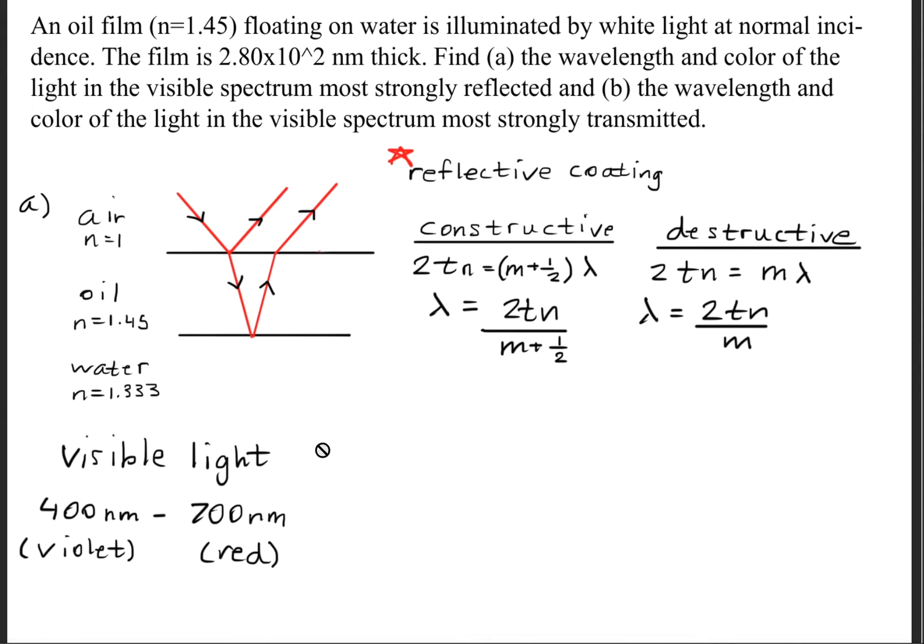I just want to remind us that the visible light spectrum ranges from 400 nanometers, which is the color violet, all the way to 700 nanometers, which is the color red. The first thing we're going to do is evaluate when the integer is zero.